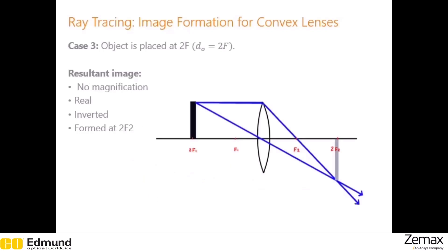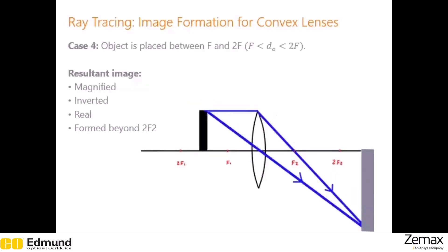Case three: the object is placed at exactly two times the focal length. The resulting image will be exactly the same size, will be real, inverted, and formed at exactly two times the focal length on the opposite side of the lens. Case four: if the object is between two times the focal length and the focal length, the resulting image will be magnified — larger than the initial object — inverted, real, and formed beyond two times the focal length on the opposite side of the lens.